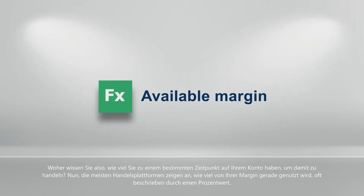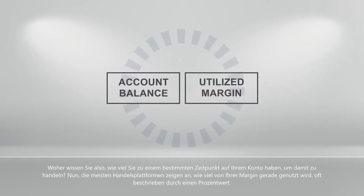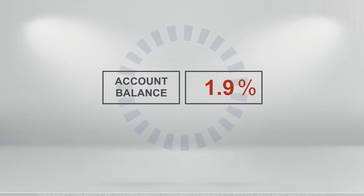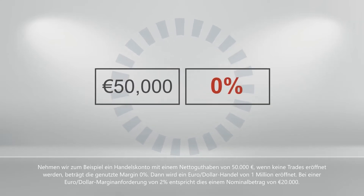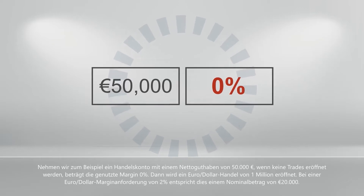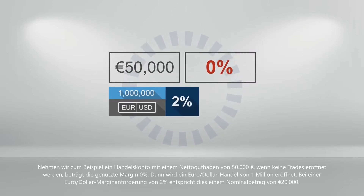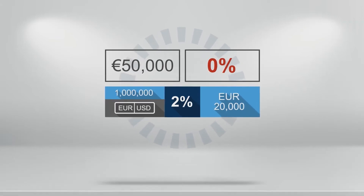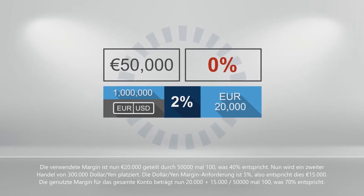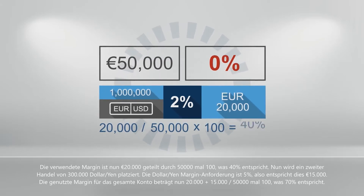So how do you know how much you have left in your account to trade with at any one time? Most trading platforms show how much of your margin is currently being utilised, often described by a percentage value. Take, for example, a trading account with a net balance of 50,000 euros. If no trades are opened, the margin being used is 0%. A euro-dollar trade of 1 million is then opened. With a euro-dollar margin requirement at 2%, this equates to a nominal amount of 20,000 euros.